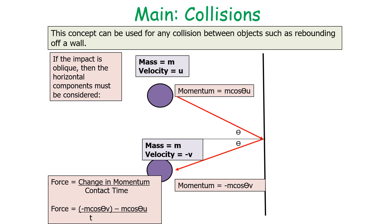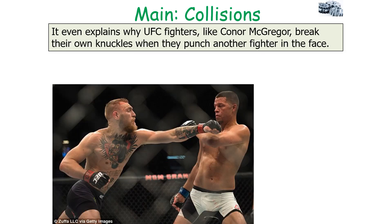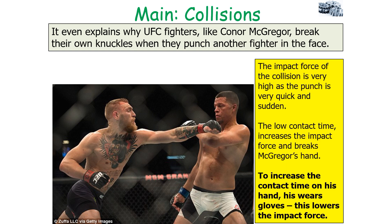This concept of F equals the change in momentum over the contact time even explains why UFC fighters like Conor McGregor can break their own knuckles when they punch another fighter in the face. The impact force of this collision is very high because the punch is very quick and very sudden. So the low contact time increases the impact force and can actually break the fighter's hand.